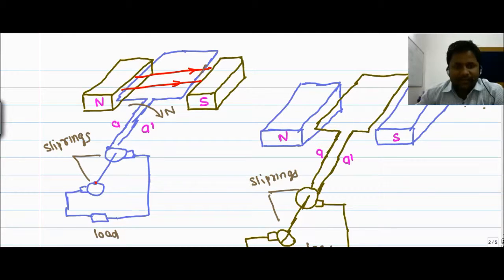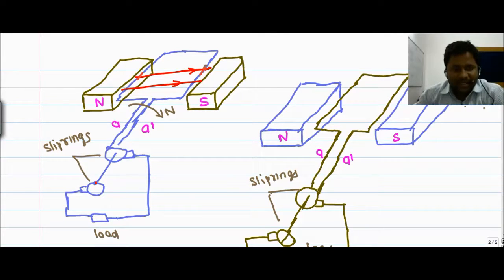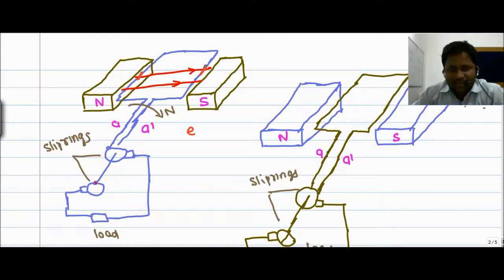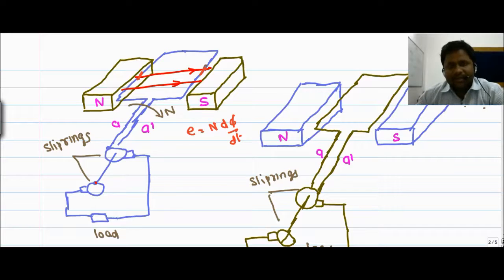In a complete rotation, this flux cuts the coil at two conductors — at conductor A and at conductor A dash. So there is a change in flux at both these points, meaning there is an induced EMF because E equals minus N dΦ/dt at points A and A dash. The direction of the induced EMF can be determined using Fleming's right-hand rule.